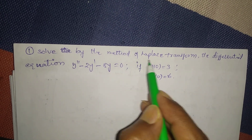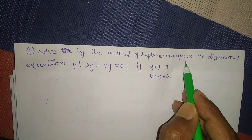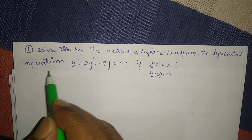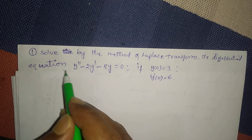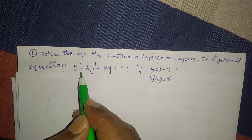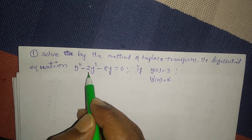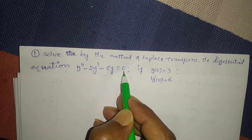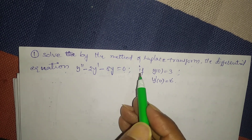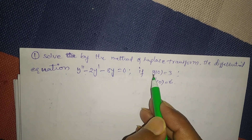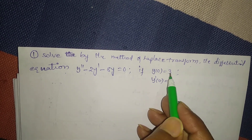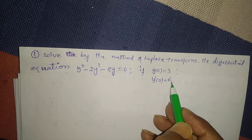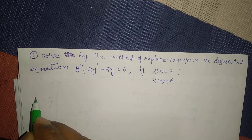By the method of Laplace transform, solve the differential equation y'' - 2y' - 8y = 0, with initial conditions y(0) = 3 and y'(0) = 6.